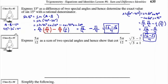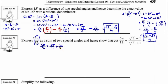Class example 3 asks us to express 5π/12 as a sum of two special angles and show that cotangent of 5π/12 equals (root 3 minus 1) over (root 3 plus 1). Consider 5π/12: the numerator 5 can be thought of as 3 plus 2, so we try 3π/12 plus 2π/12, which equals 5π/12. And 3π/12 simplifies to π/4, and 2π/12 simplifies to π/6. So 5π/12 equals π/4 plus π/6.